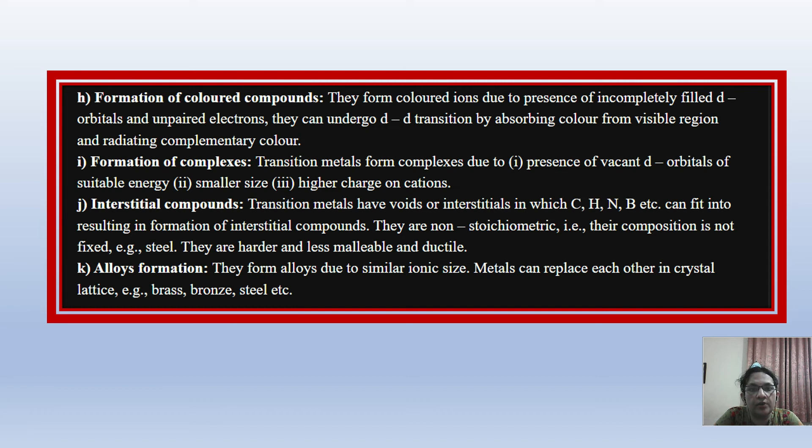Formation of colored compounds happens through d-d transition. When electrons are in a higher state, they absorb energy and show color. Formation of complexes—you've seen coordination compounds—there are many transition elements that participate in this formation. The cause is the presence of vacant d orbitals and small size with high charge on metal ions.